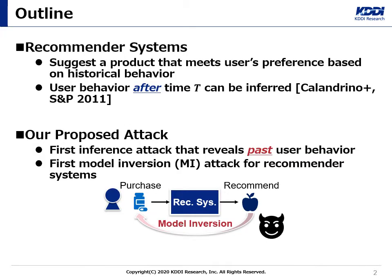To begin with, I will give an outline of our research. We focus on recommendation systems. As you know, recommendation systems have become an absolutely essential component of EC sites. A recommendation system suggests a product that meets a user's preference based on its historical behavior such as ratings and purchases. As recommendation systems play an increasing role on the web, understanding privacy risks has become a compelling research topic.